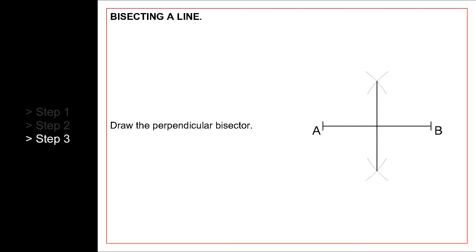And finally, draw the perpendicular bisector by joining the points of intersection of the arcs. This divides line AB into exactly two equal parts.